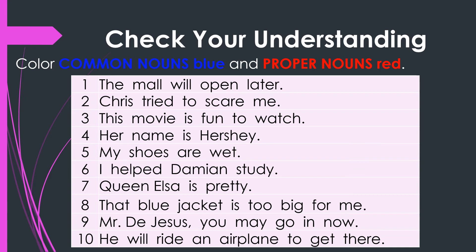Now let us use a blue marker and find all the common nouns. In the first sentence, mark mall blue. In the third sentence, the word movie should be blue. In the fifth sentence, the word shoes should be marked blue. In the eighth sentence, we have the word jacket. In the tenth sentence, we have the word airplane.